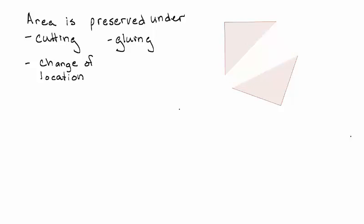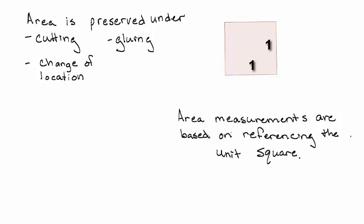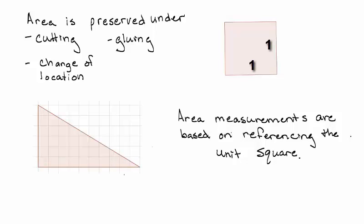The area of the square is just the sum of the area of the triangles. Area measurements are based on referencing the unit square, the square with side length 1. A region that has an area of 30 square units can be cut and organized into 30 unit squares.